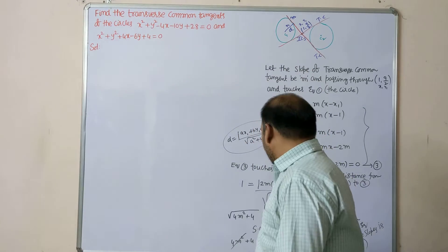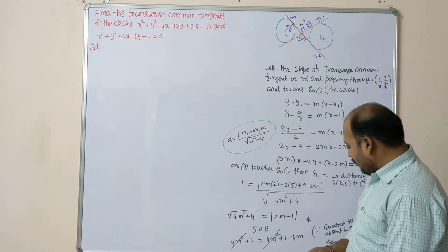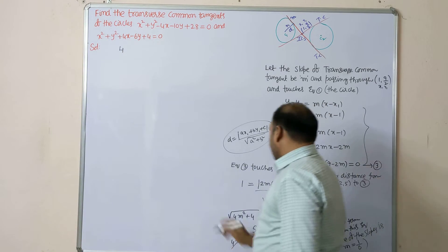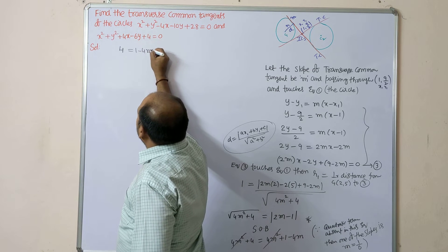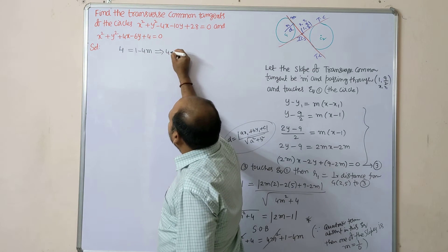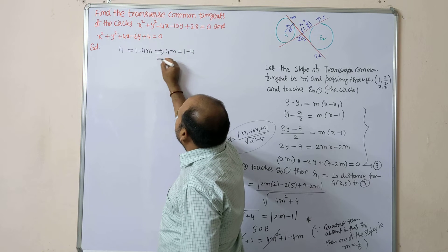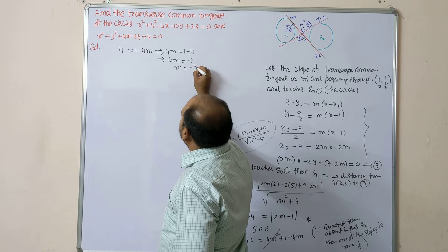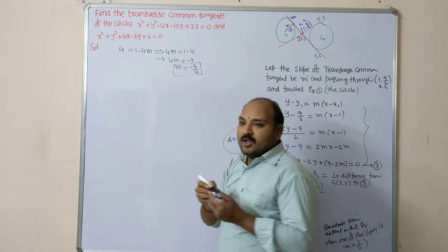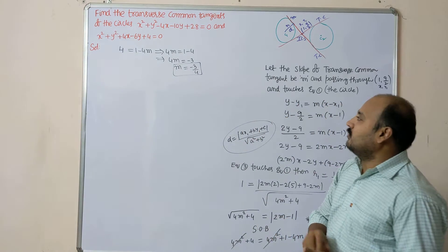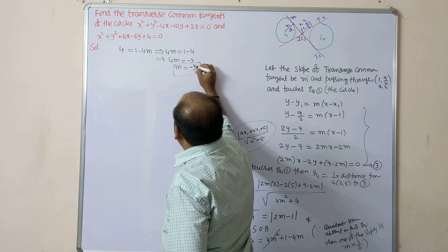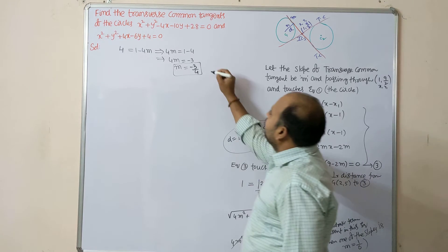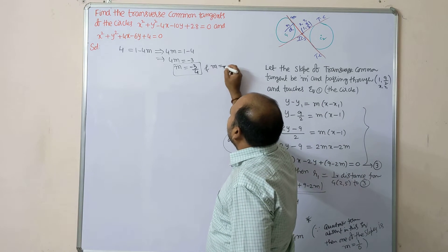After cancelling the quadratic terms, we get: 4 = 1 - 4m, so 4m = 1 - 4 = -3, giving m = -3/4. So one slope value is m = -3/4, and the other slope is m = 1/0 (undefined). These are case 1 and case 2.